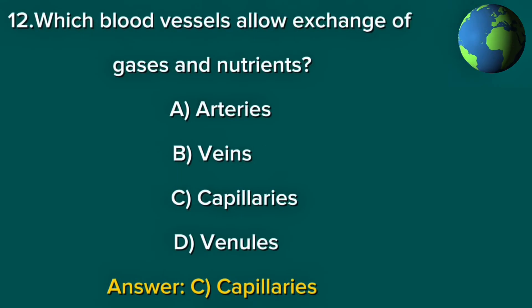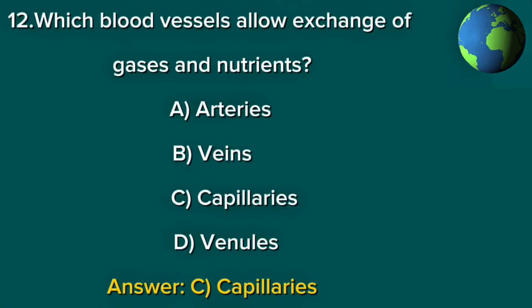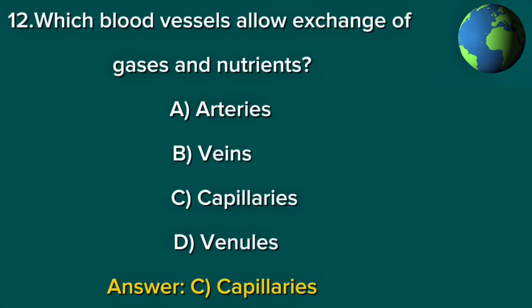Question 12. Which blood vessels allow exchange of gases and nutrients? A. Arteries. B. Veins. C. Capillaries. D. Venules. Answer: C. Capillaries.